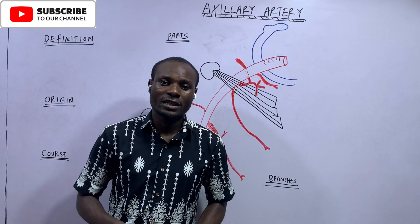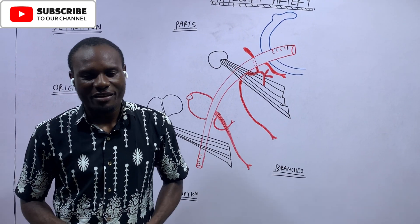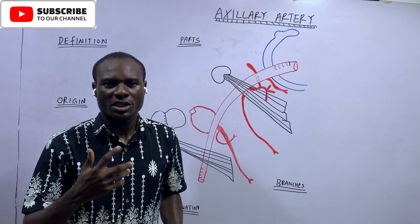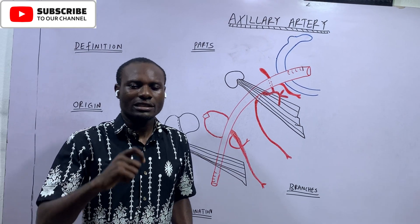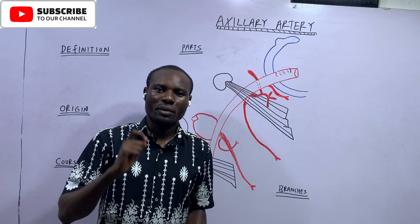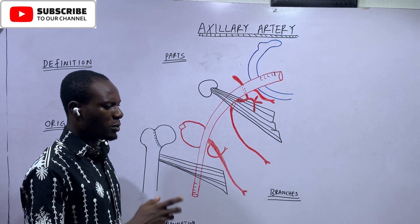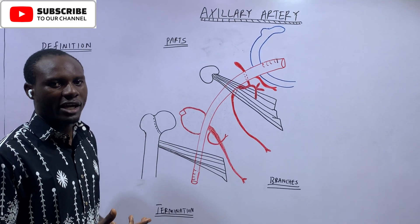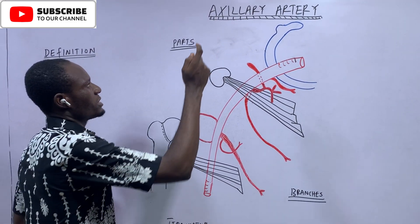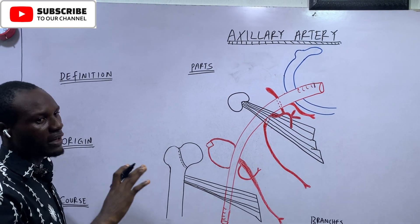Welcome to today's class on the axillary artery. Arteries provide oxygenated blood to tissues, and this blood supply is very important for the sustenance of every tissue. So we're looking at the main arterial stem of the upper extremity, and that is called the axillary artery.